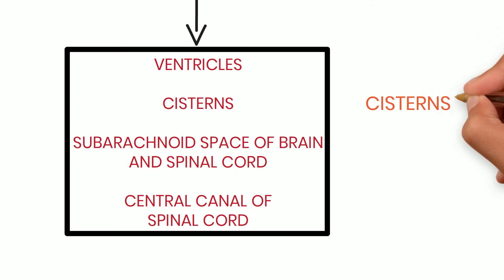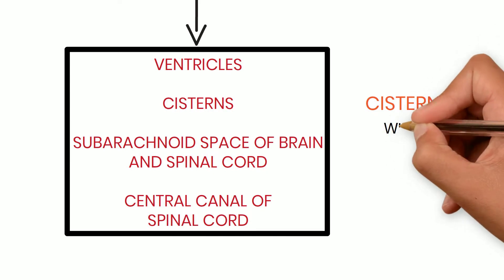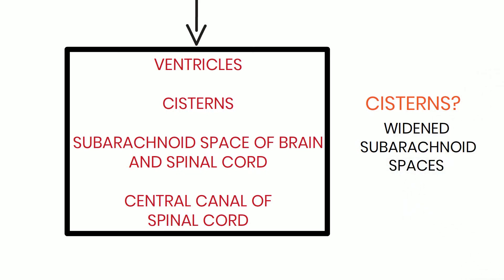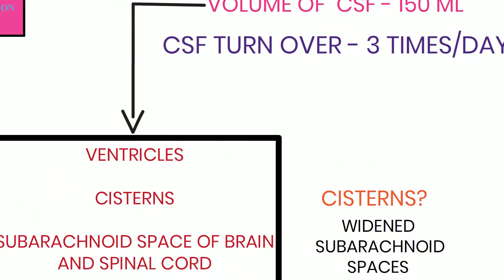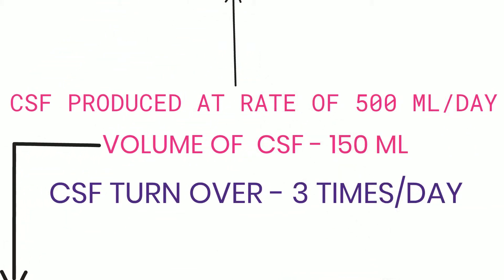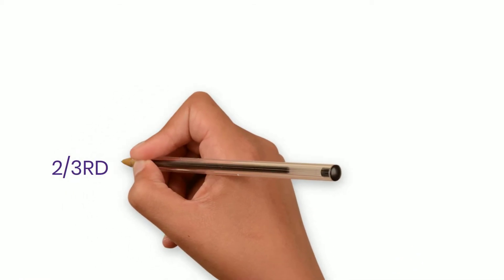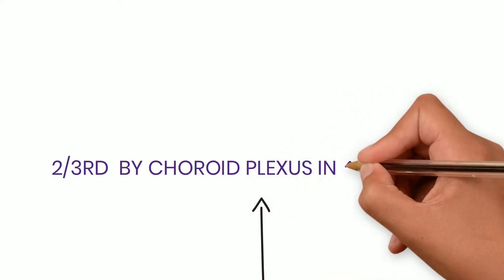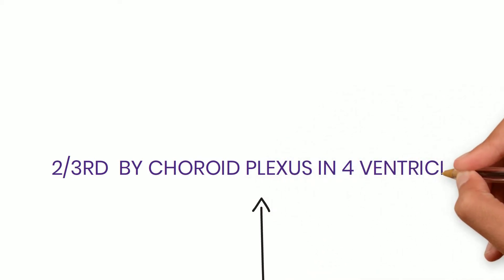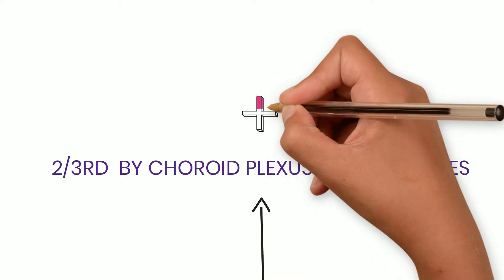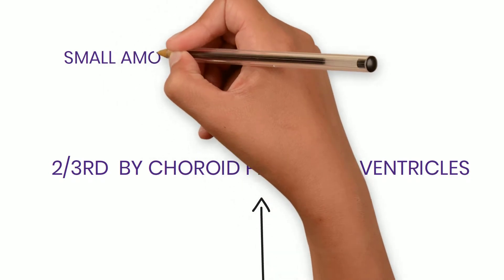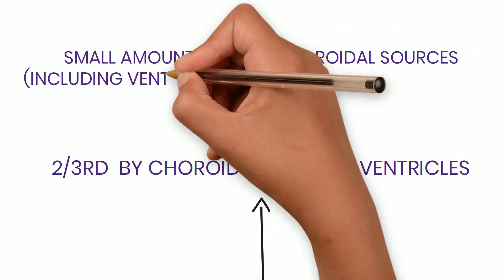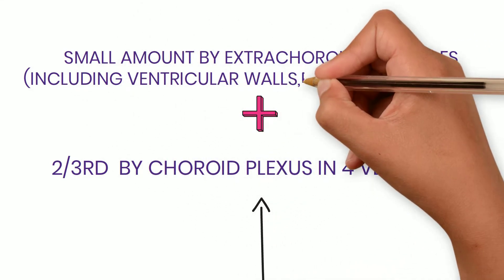Cisterns are nothing but widened subarachnoid spaces in areas where the pia mater and arachnoid mater membranes are not in close approximation. CSF is produced — about two-thirds of it is produced by the choroid plexus present in all four ventricles, but mainly in the two lateral ventricles. In addition, a small amount is also from extra-choroidal sources like ventricular walls and perivascular spaces.